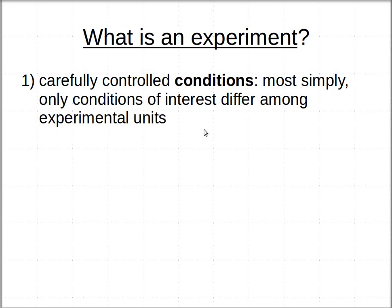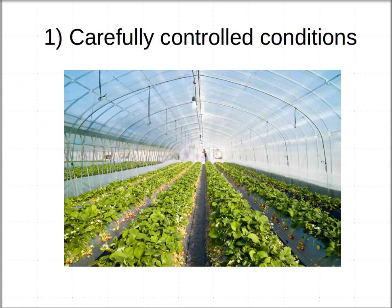Most simply, you have conditions that you've tried to standardize as best you can across all possible variants, so that only the conditions of interest differ among experimental units. For example, if I'm interested in the levels of fertilizer as being what might cause more crop growth, I've tried to standardize everything else — the soils are the same in all my plots, I use the same kind of corn. Everything I can think of, I've tried to standardize except only that condition I'm interested in.